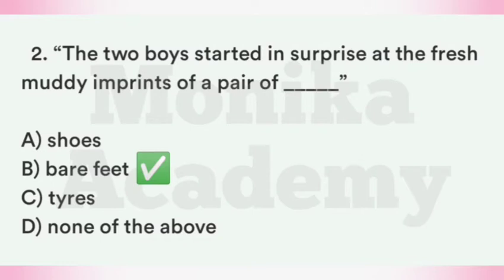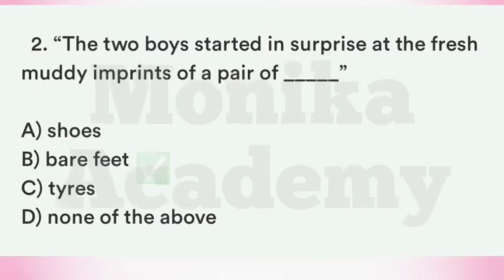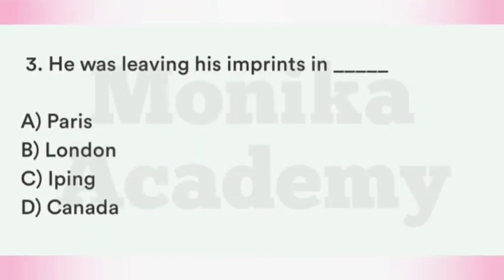Question 3: He was leaving his imprints in ___. Where was this person leaving footprints? Option A: Paris. Option B: London. Option C: Ipping. Option D: Canada. The correct answer is Option B, London. This person was leaving his footprints in London.